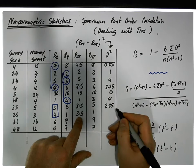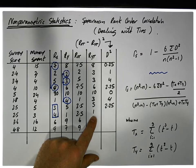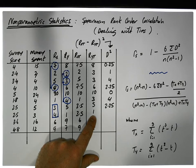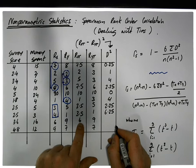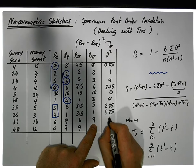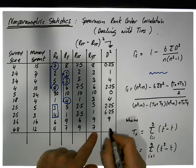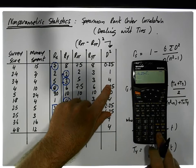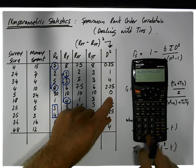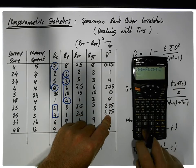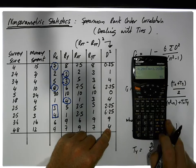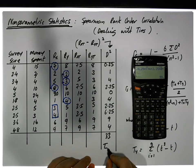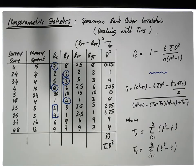Then 3.5 minus 5 gives us 1.5, squared gives us 2.25. Then 3.5 minus 1 gives us 2.5, and 2.5 squared gives us 6.25. Then 6 minus 9 gives us −3, and −3 squared gives us 9. Then 9 minus 7 gives us 2, squared gives us 4. Summing all of these: 0.25 + 1 + 4 + 2.25 + 0 + 4 + 2.25 + 6.25 + 9 + 4 gives us a total of 23. That is the sum of the d² values.